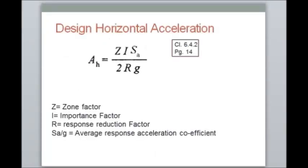Ah is the design horizontal acceleration. The formula for Ah is given in Clause 6.4.2 on page 18: Ah = (Z/2) × (I/R) × (Sa/g). Here Z is the zone factor, I is the importance factor, R is the response reduction factor, and Sa/g is the average response acceleration coefficient.